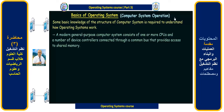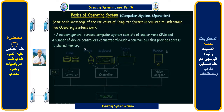Now let us see what we can study from computer system operation in this lecture. A modern general purpose computer system consists of one or more CPUs and a number of device controllers connected through a common bus that provides access to shared memory. Don't worry about this definition — it will become clear as I show you a diagram.